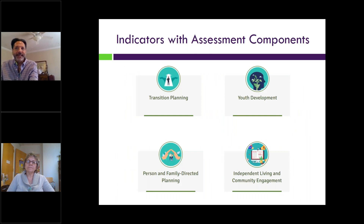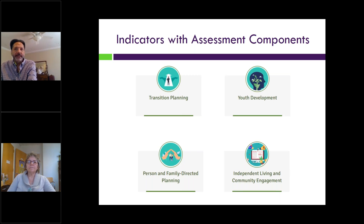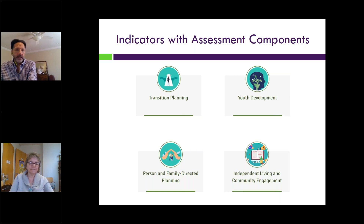The Transition Discoveries Guide contains nine secondary transition-related areas broken down into 55 sub-indicators used as a roadmap to guide students and families. These areas are presented through definitions, characteristics, outcomes, and stories told by youth, families, and stakeholders. While Transition Discoveries is itself a type of assessment, the sub-indicators directly related to transition assessment include transition planning, youth self-determination, person and family-directed planning, and independent living and community engagement skills.